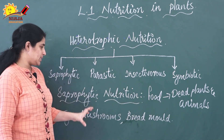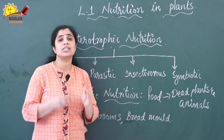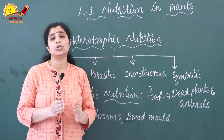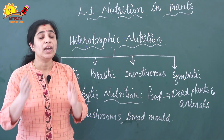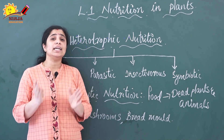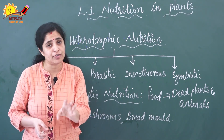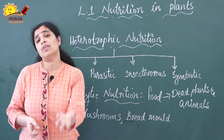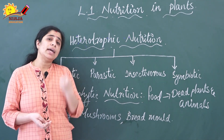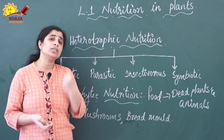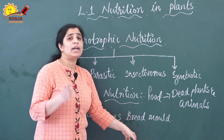In saprophytic nutrition, saprophytes get nutrients from dead and decaying matter. They convert the dead and decaying matter into a solution form and then absorb the nutrients from the solution. Examples of saprophytes include mushrooms, bread mold, etc.